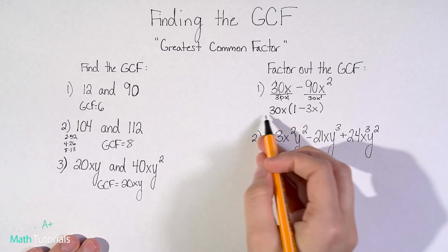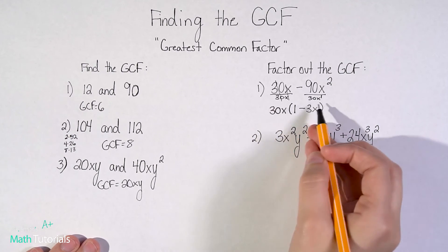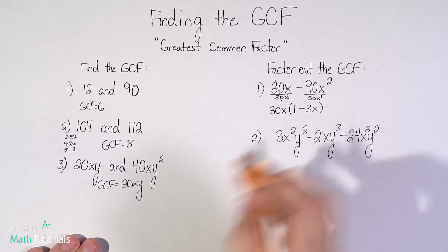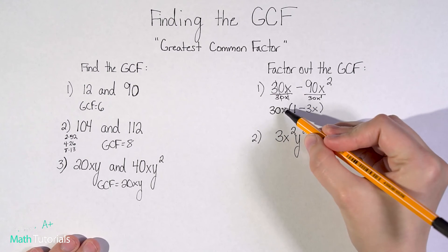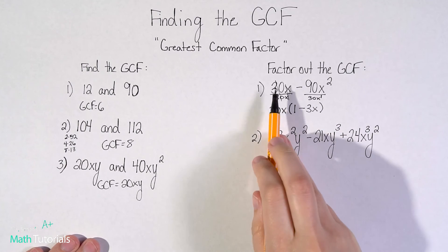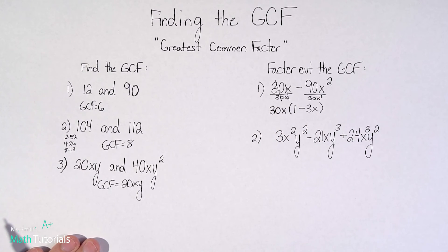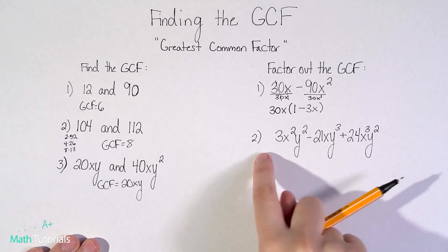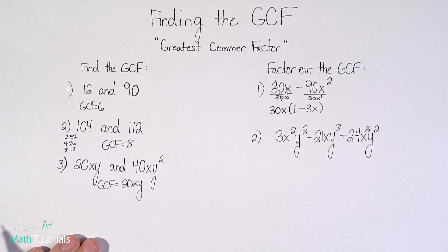So this would be the GCF factored out of the equation. If I were to distribute that 30x back into the parentheses, it should give me back the original equation. So that's a way you can kind of double check yourself to make sure you've done it right. All right, let's look at a little more complex example.